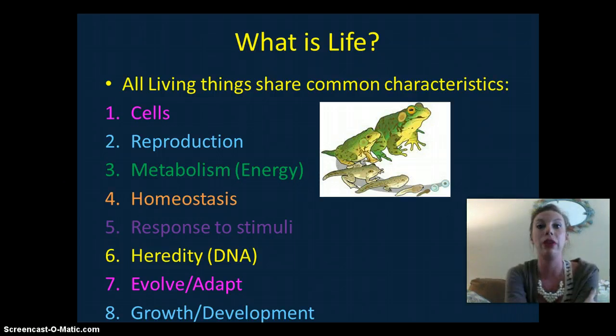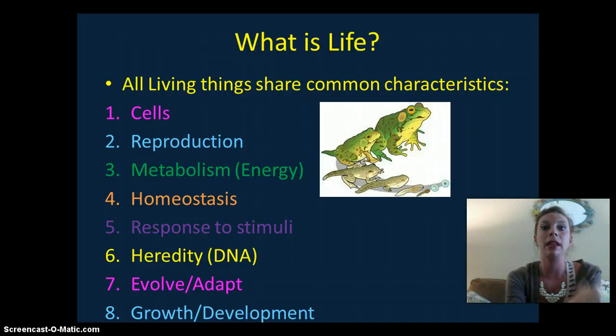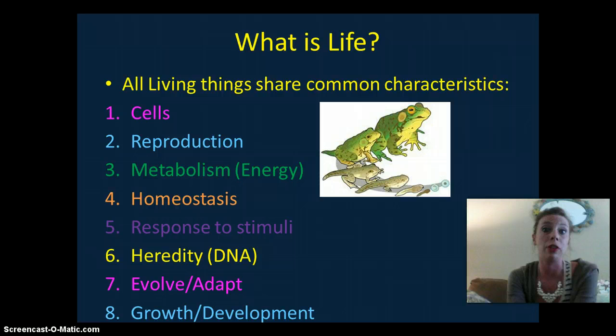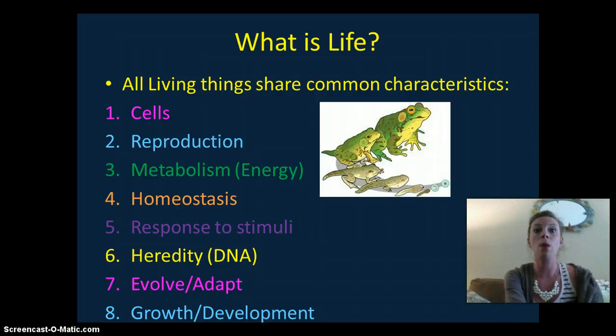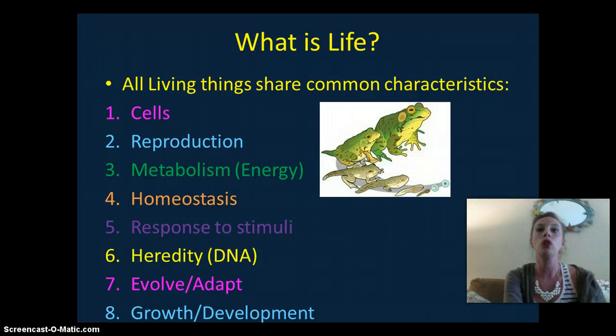Metabolism is the third common characteristic. It is the use of energy, so organisms are going to use energy through cellular respiration and or photosynthesis. All living things are going to try to maintain homeostasis, which is a stable, constant condition within their living system. For example, a plant is going to grow towards the sun, towards the light.